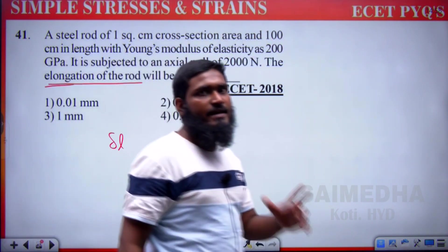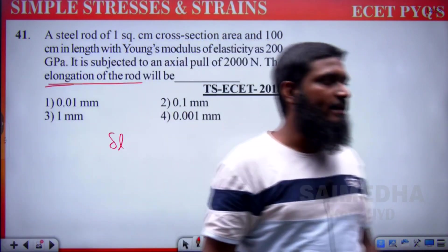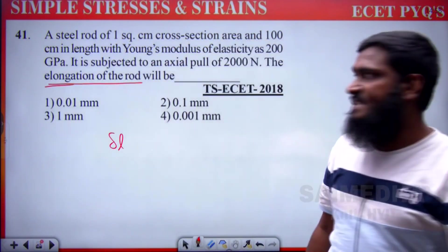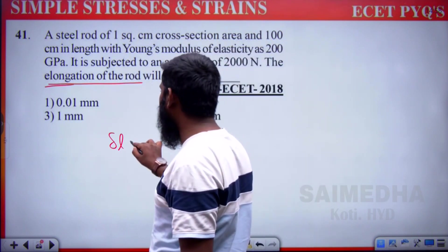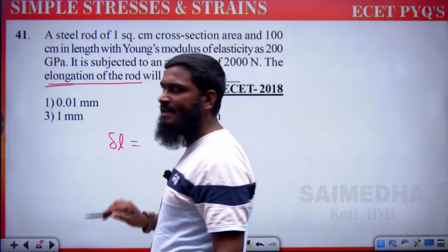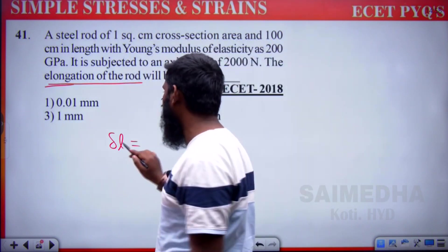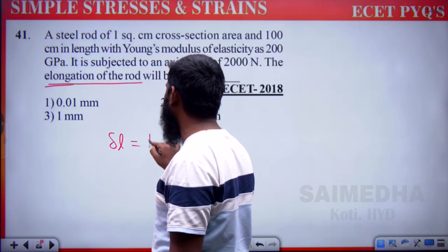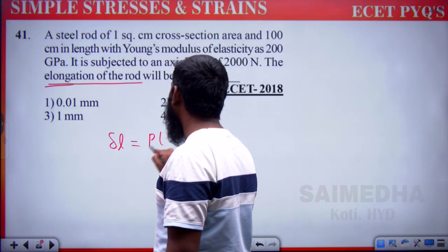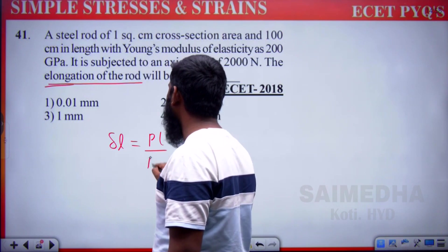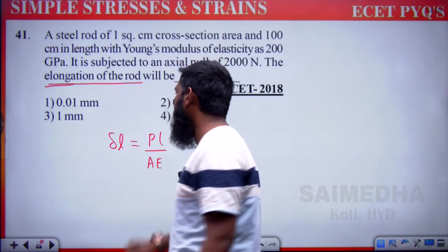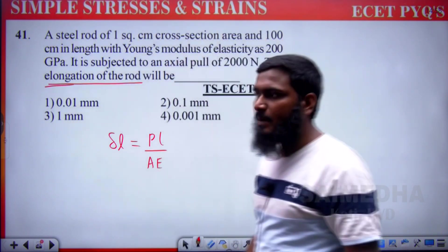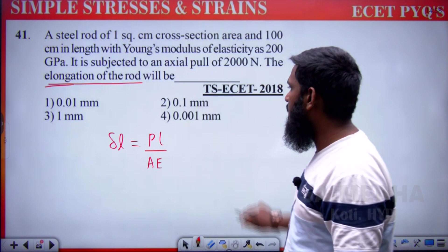Directly we can write the formula: delta L is equals to P L by A E. That is the formula whenever elongation is asked.